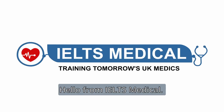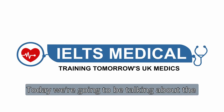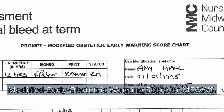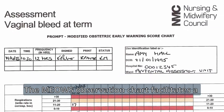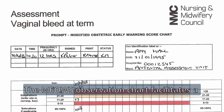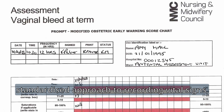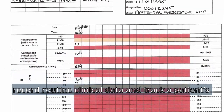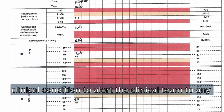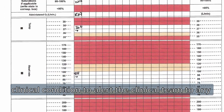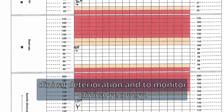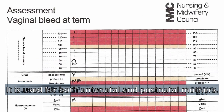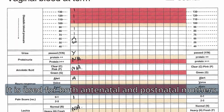Hello from IELTS Medical. Today we're going to be talking about the Modified Early Obstetric Warning Score, or MEOWS. The MEOWS observation chart facilitates a standardised approach to recording vital signs, recording routine clinical data, and tracking a patient's clinical condition to alert the clinical team to any clinical deterioration and to monitor clinical recovery. It is used for both antenatal and postnatal mothers.